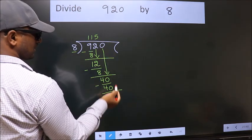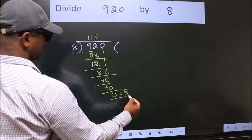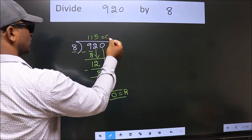No more numbers to bring it down. So we stop here. This is our remainder. This is our quotient.